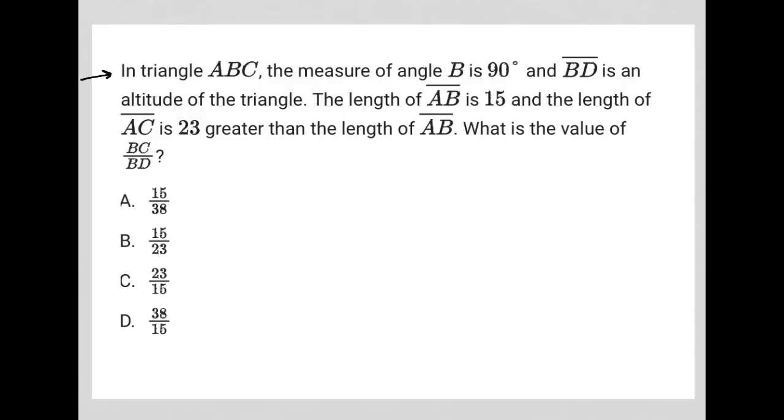This question says in triangle ABC, the measure of angle B is 90 degrees and BD is an altitude of the triangle. So just given that, let me just draw this first, actually.